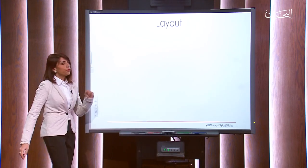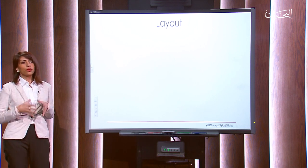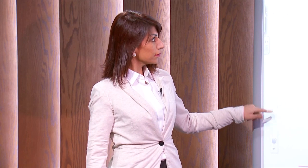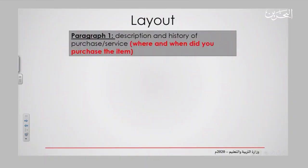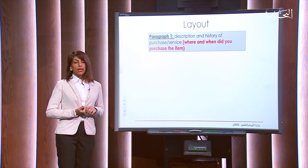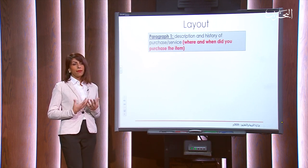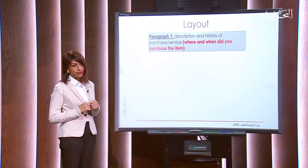Before we write together and I show you the proper structure of a letter of complaint, let's see the layout. In paragraph one, there is a description and history of the purchase or the service. You have to mention where you bought it from — online or from a local shop — and you have to tell when you purchased the item: one week back, one month back, depending on the time.